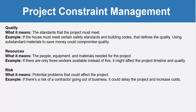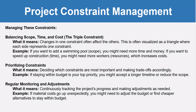Risk refers to potential problems that could affect the project. For example, if there is a risk of a contractor going out of business, it could delay the project and increase cost. Managing these constraints means balancing scope, time, and cost — normally called the triple constraint.